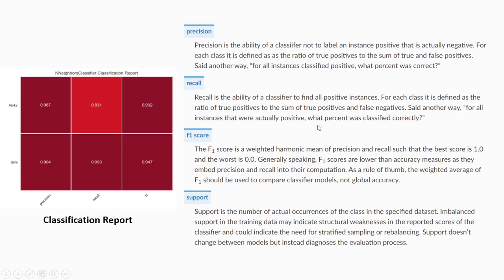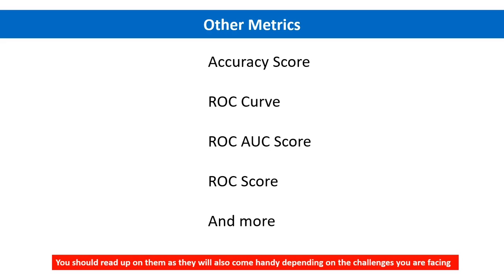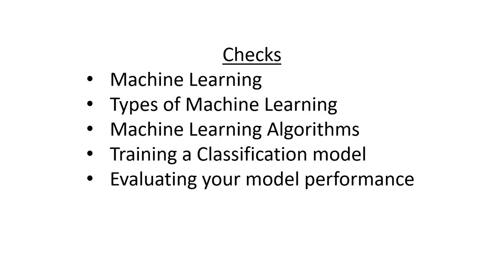You can read more on the scikit-learn webpage for classification reports. We also have the F1 score, support, accuracy score, ROC score, and many other metrics. You should read up on all these metrics because depending on the challenge you're facing, you may need to focus on a specific one. To summarize: we covered machine learning, types of machine learning, classification algorithms, the training flow chart, and evaluation metrics.